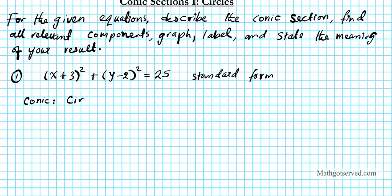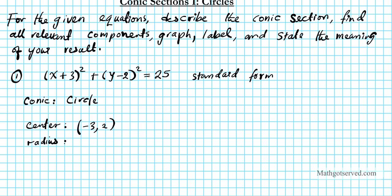Now let's find the relevant components for a circle — the only things you need are the radius and center. To find the center, take the opposite of the number next to each variable: the x-coordinate is -3 and the y-coordinate is +2, so the center is (-3, 2). For the radius, take the square root of the constant on the right side: √25 = 5. From the center, we go 5 units left, right, up, and down.